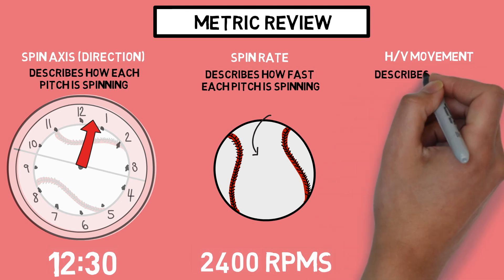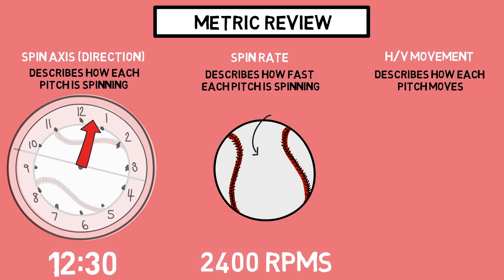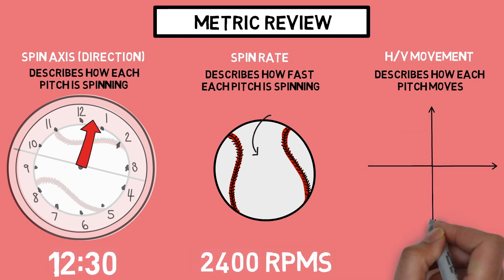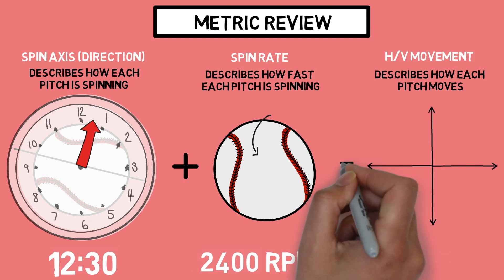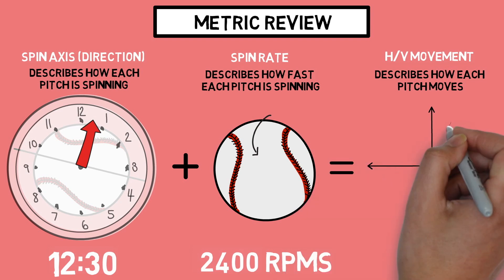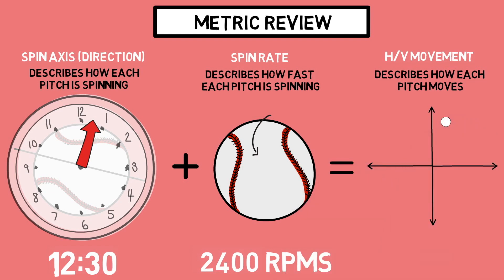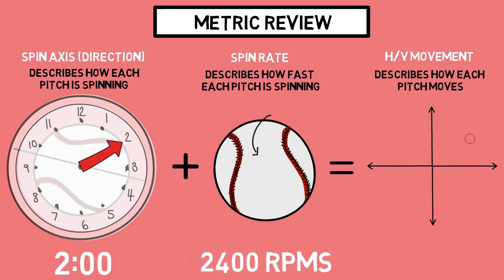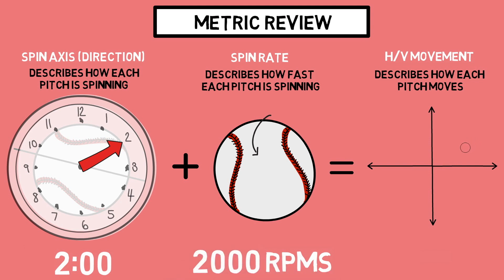Finally, we have our movement plots, which describe how each pitch moves. You can think of this like your output if you were to combine spin axis and spin rate. In this example of a 12:30 spin axis and a 2400 RPM pitch, you would end up right around here on our movement plot. However, if you change your spin axis, you can see how this would affect where that pitch would end up. Same goes for changing spin rate — if you had a lower spin rate, this dot would move closer to that center point.